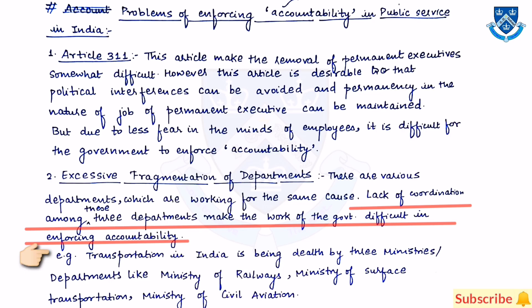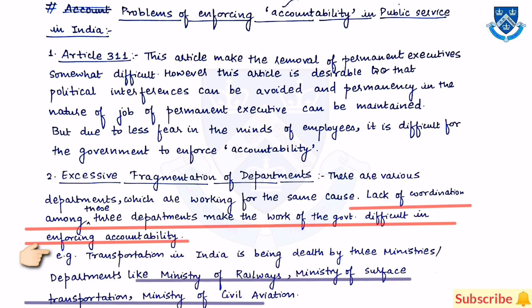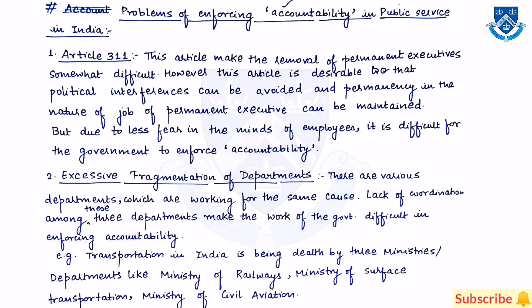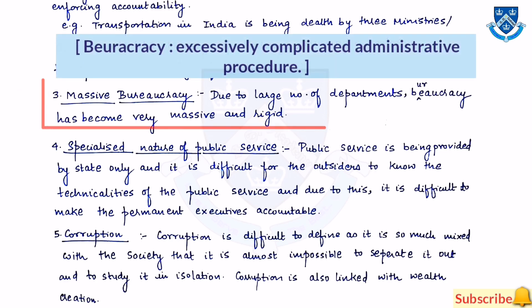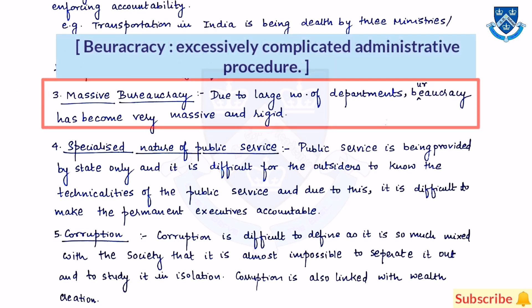For example, transportation in India is dealt with by three ministries: the Ministry of Railways, the Ministry of Surface Transportation, and the Ministry of Civil Aviation. The third problem is massive bureaucracy — due to a large number of departments, bureaucracy has become very massive and rigid.